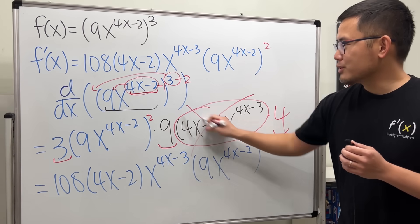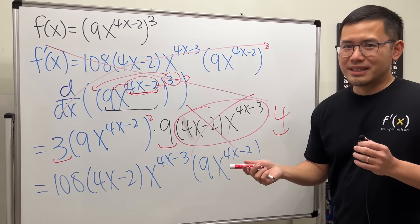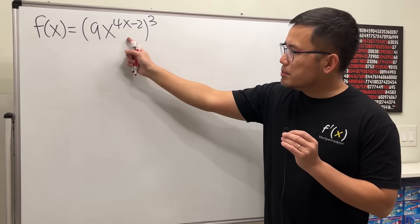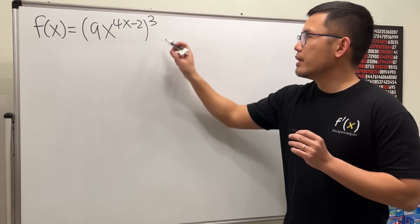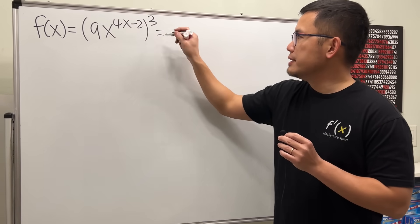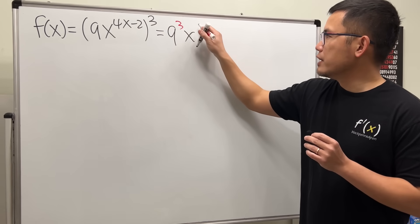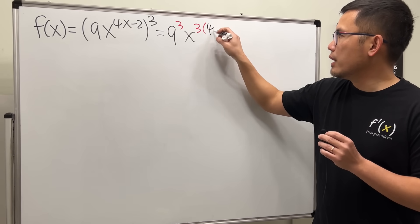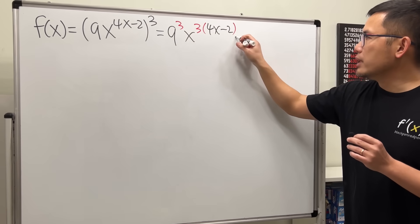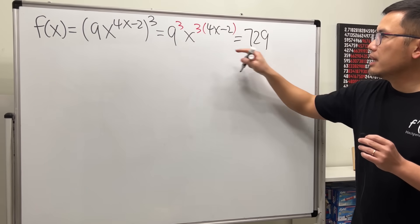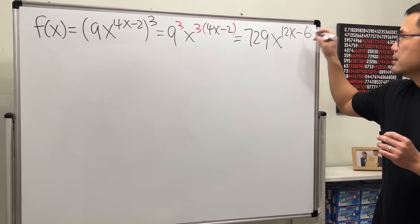Let's cross that out and get this right. First, let's simplify: we have a multiplication, so we can distribute the power. This gives us 9 to the third power times x, and then we multiply the exponents: 3 times (4x minus 2). Working this out: 9 cubed is 729, and distributing the 3 gives 12x minus 6. So we have 729 · x^(12x − 6).